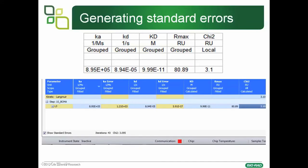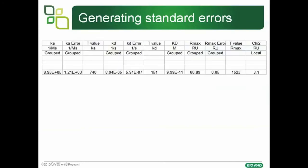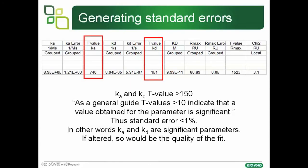Here's a worked example. These are our rate constants. If you click Show Standard Errors, columns appear where we get the standard error for the fit. You can then generate a t-value by taking the parameter and dividing by its standard error. In our case, the t-values are greater than 150. The BIAevaluation software indicates t-values greater than 10 mean the parameter is significant. With t-values of 150, it means our standard error on the fit is less than 1%.